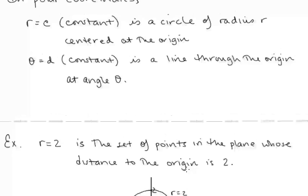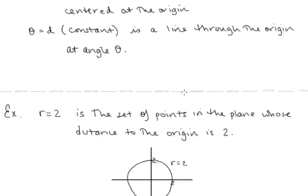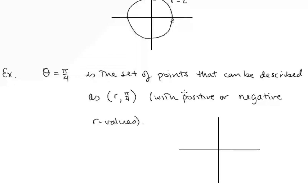If we have theta equals a constant, that's going to be a line through the origin at angle theta. For example, theta equals pi over 4 is a set of points described as (r, pi/4), with positive or negative r values. The points on one branch have positive r values and the points on the other branch have negative r values, so the equation theta equals pi over 4 gives us this entire line of points.